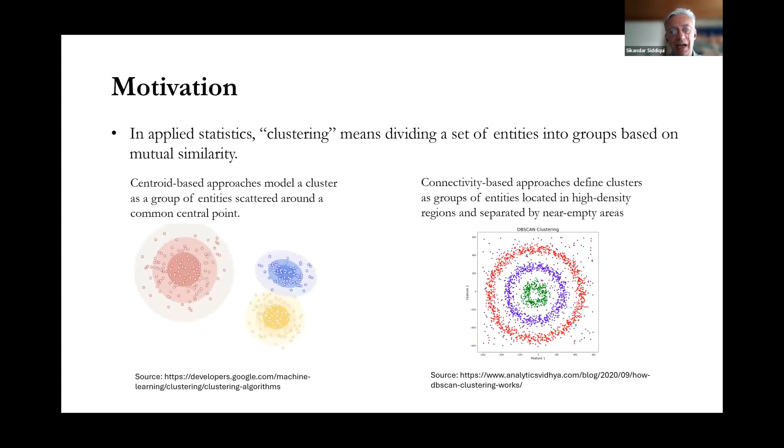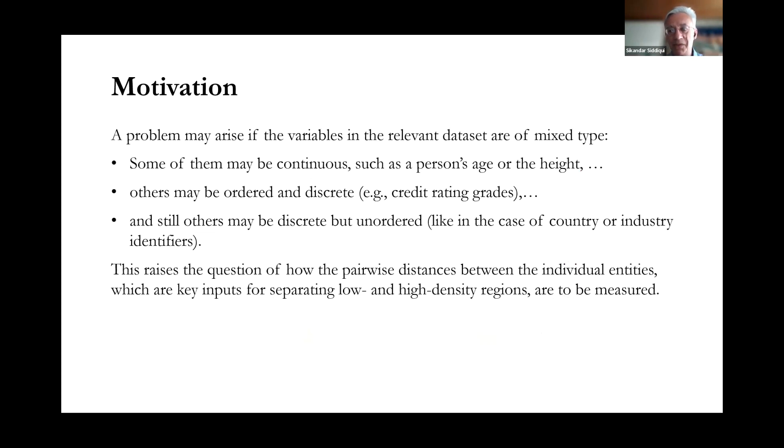The objective that we're pursuing is to solve a problem that may arise in certain applications of the clustering procedure. Namely, that we sometimes encounter the case that the variables in the relevant data set may be of mixed type. Some of them may be continuous, like a person's age or height, whereas others might be ordered and discrete, like credit rating grades or school grades. And still others may be discrete but unordered, like in the case of country identifiers or sector identifiers in finance and economics. There's no natural ordering to them.